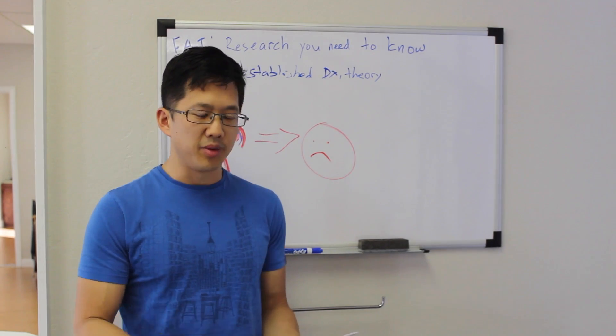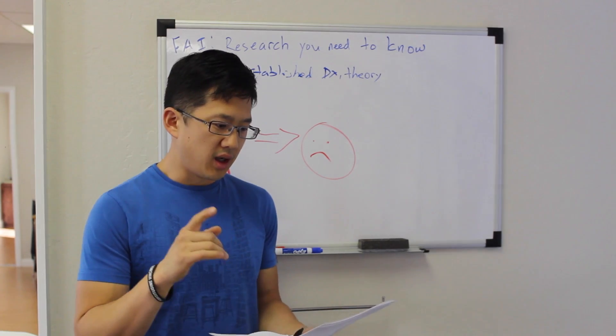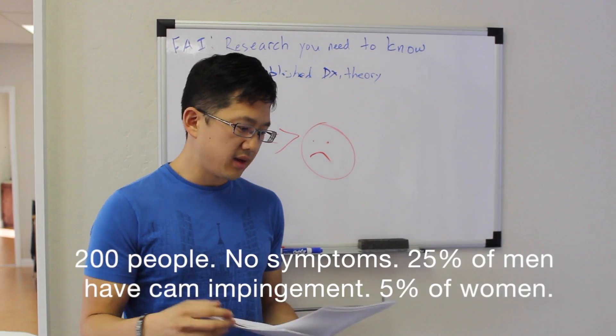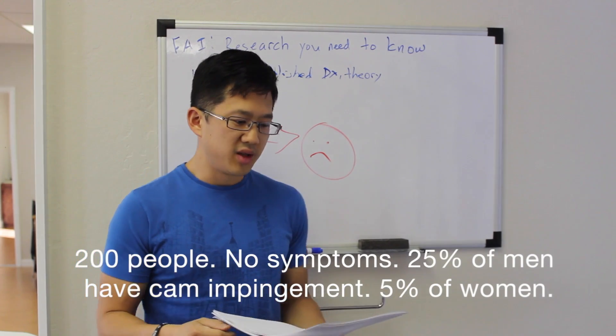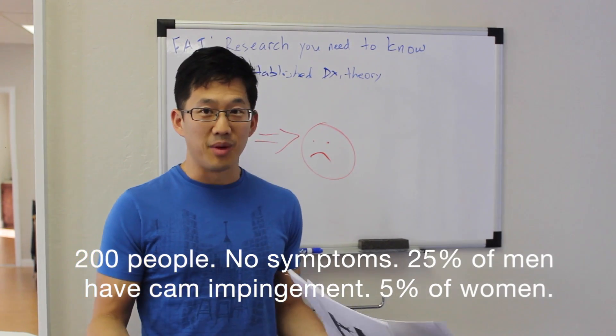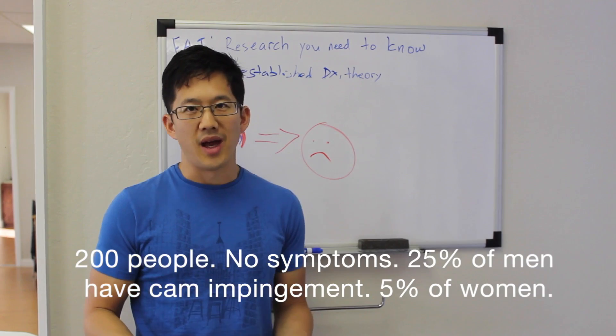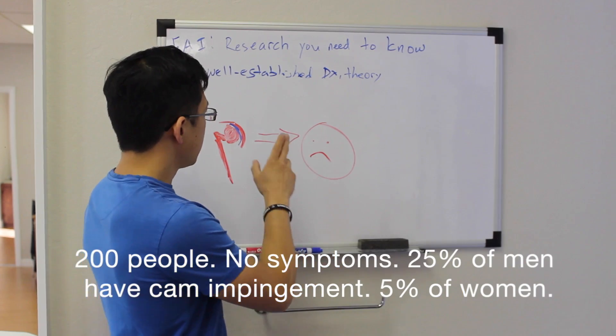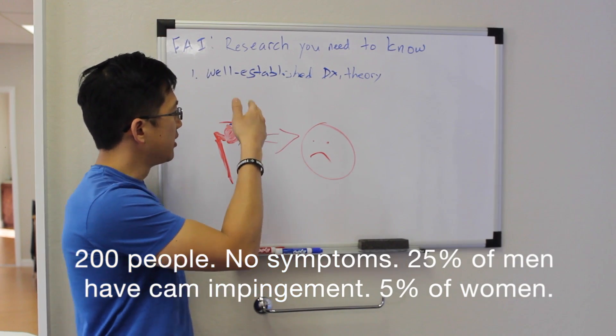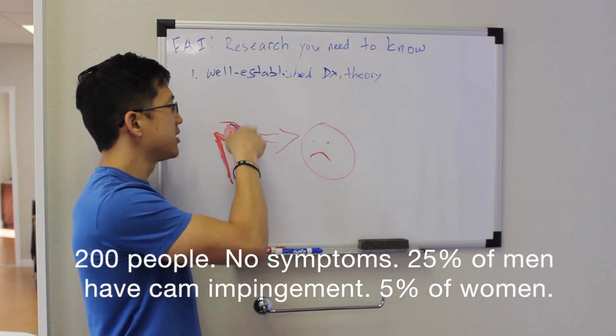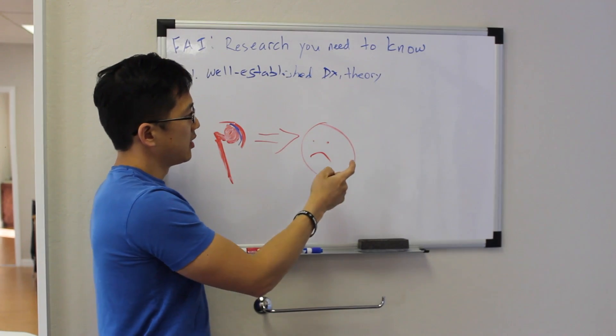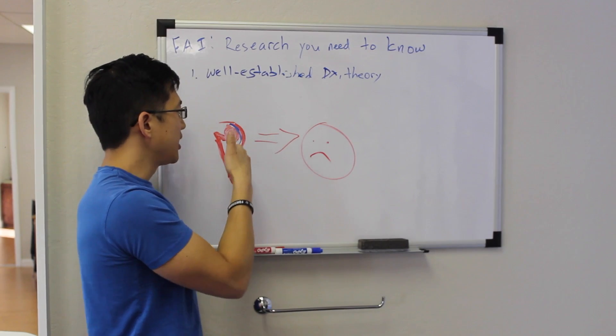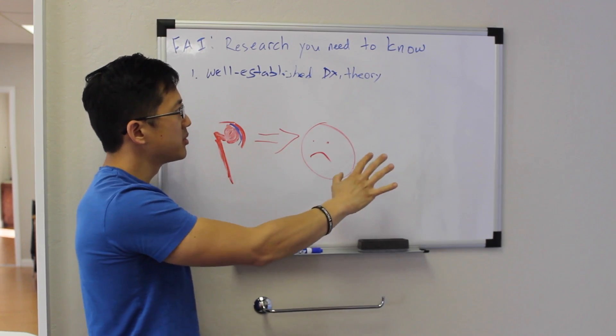So in 2010, there was a study done using MRIs on people who had no symptoms again. So this was 200 people with zero symptoms, 111 women and 89 men. 14% had CAM impingement, a quarter of the men had CAM impingement, and 5% of the women had CAM impingement. These 200 volunteers all had zero symptoms. So again, you had the finding of this using MRIs not having anything to do with symptoms. You basically can have this and no problems.